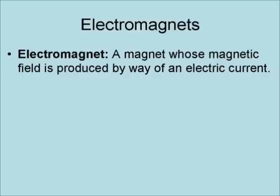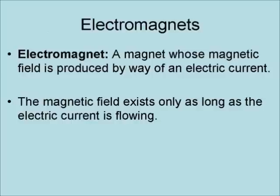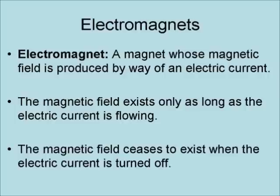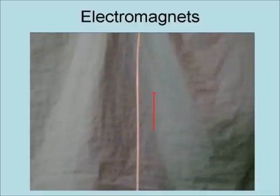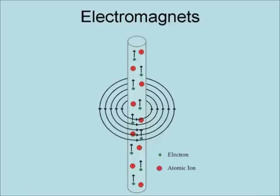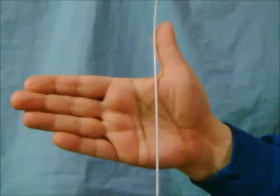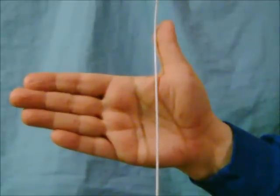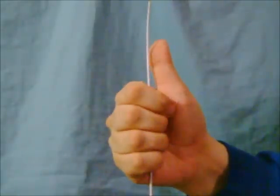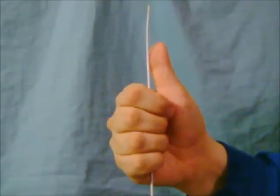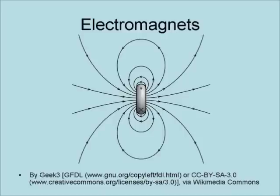An electromagnet is a magnet whose magnetic field is produced by way of an electric current. The magnetic field exists only as long as the current is flowing, and ceases to exist when the electric current is turned off. An electromagnet starts with a wire. Introduce an electric current into the wire flowing in the direction of the arrow. The flow of the current produces a magnetic field, even though the wire remains electrically neutral. This is where the right-hand rule comes into play: point your thumb in the direction of the current and wrap your hand around the wire. The magnetic field points in the direction your fingers are pointing.